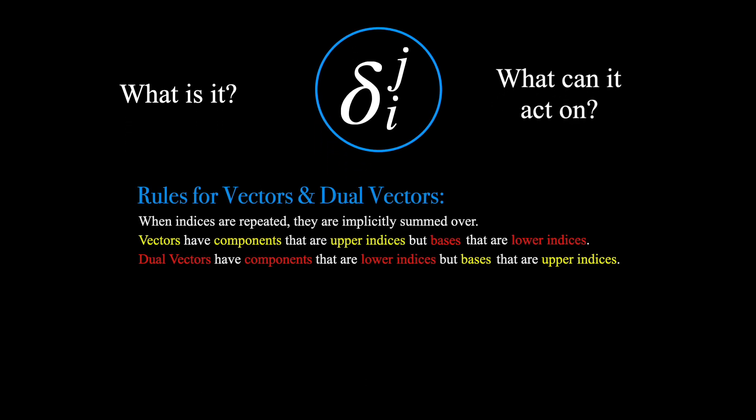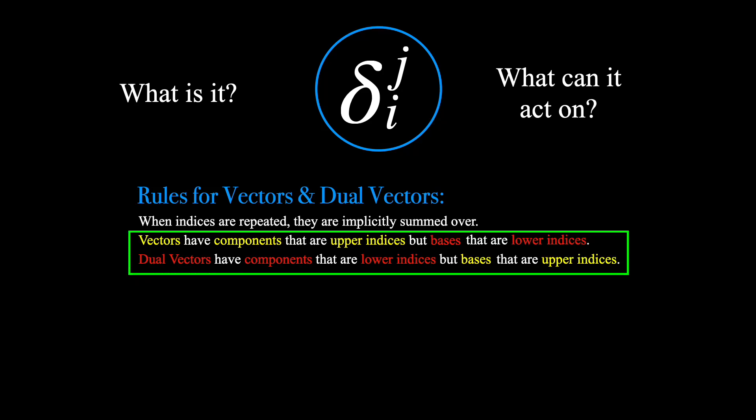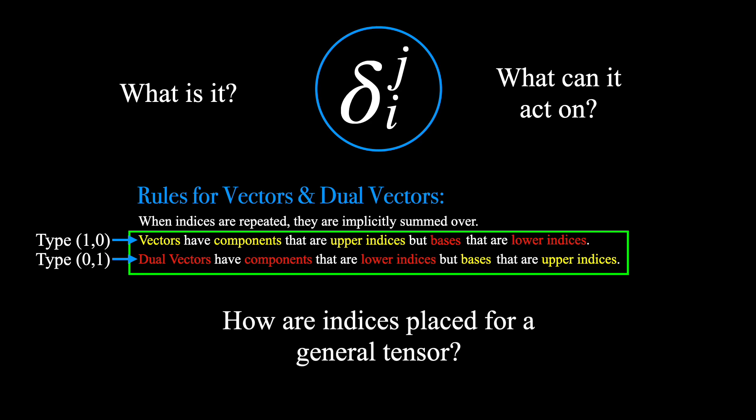In order to answer these questions, we'll need to revisit the three Einstein notation rules I mentioned in a previous video. Two of these rules specified how to write the components and bases of both vectors and dual vectors. But remember, a vector is just a type (1,0) tensor, and a dual vector is a type (0,1) tensor.